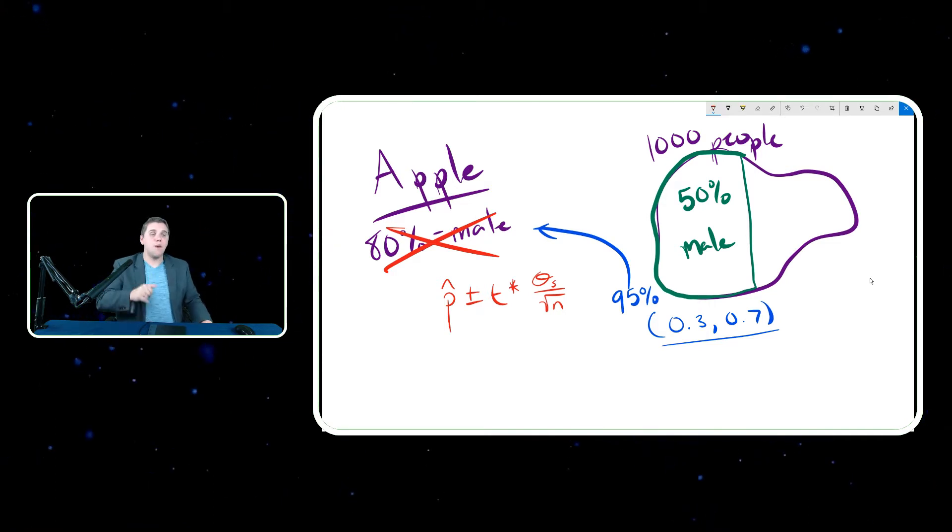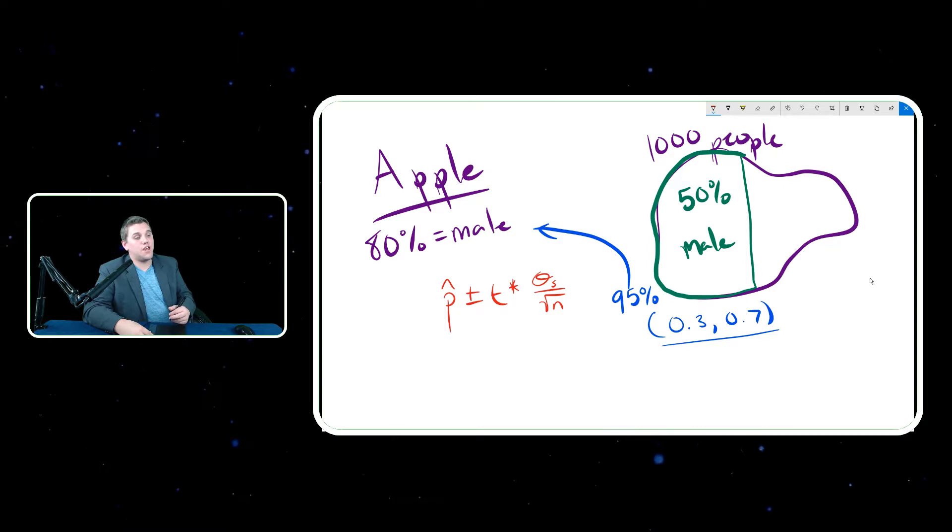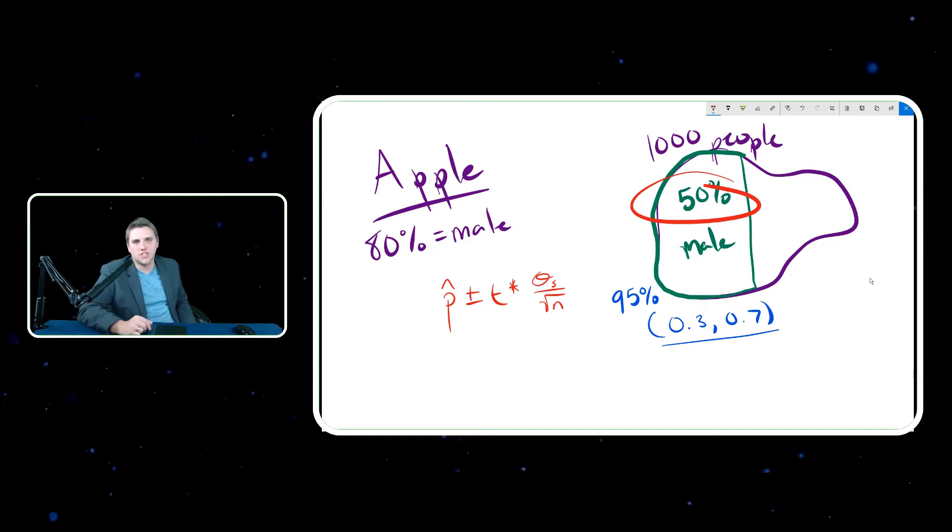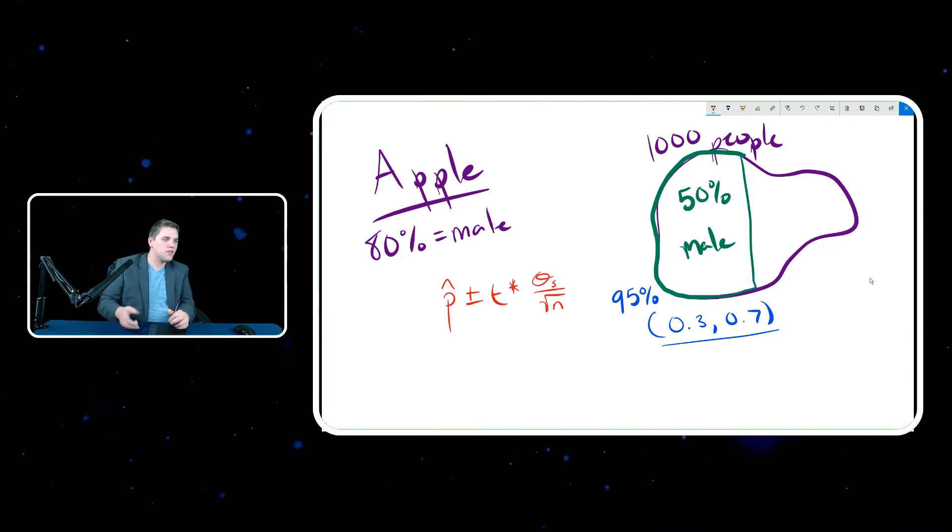If Apple is wrong, then we should take the next best option, which is 50%, until at least someone else comes by and says 50% is also a little bit off. But for now, I am 95% confident that it's not 80%, it's 50%. And that's basically how science works.